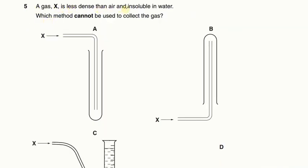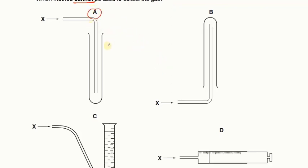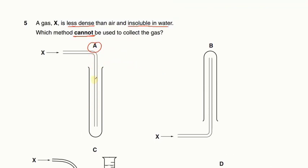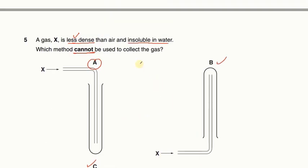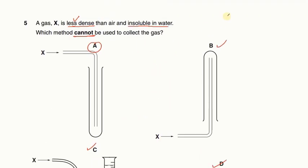A gas X is less dense than air and is insoluble. Which method cannot be used? We cannot use method A because in A the gas is delivered downward. Since the gas is less dense, it will simply escape out and not be collected inside the tube. The other methods — upward delivery, water displacement, and gas syringe — will all work. So A is the right answer for which method cannot be used.